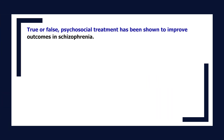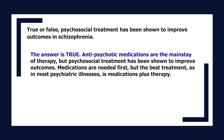True or false: psychosocial treatment has been shown to improve outcomes in schizophrenia. The answer is true. Antipsychotic medications are the mainstay of therapy, but psychosocial treatment has been shown to improve outcomes. Medications are needed first, but the best treatment, as in most psychiatric illnesses, is medications plus therapy.